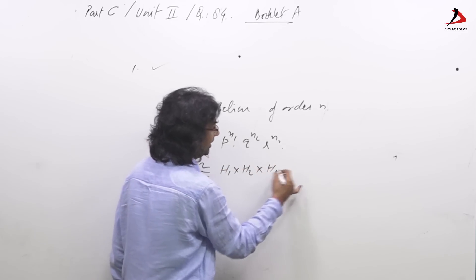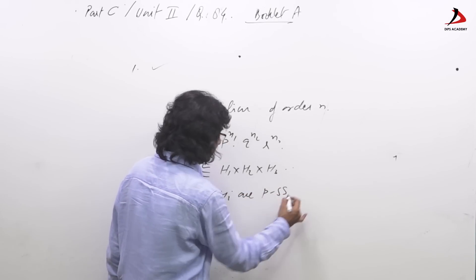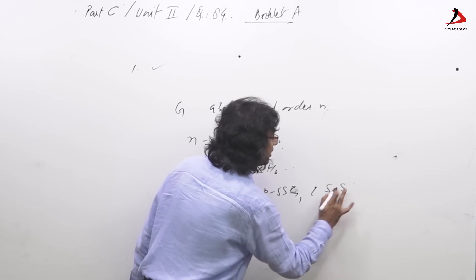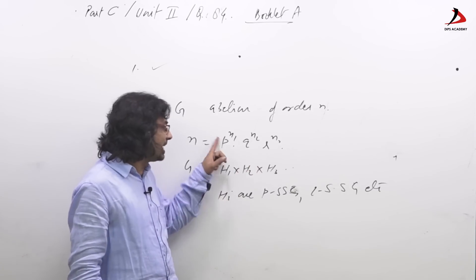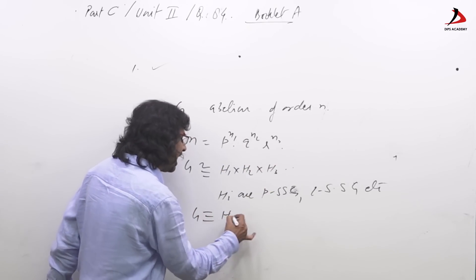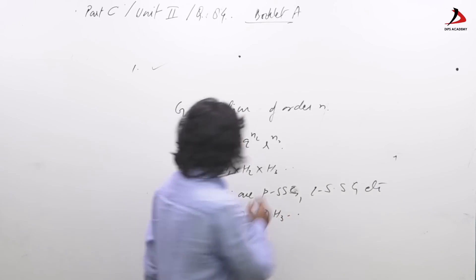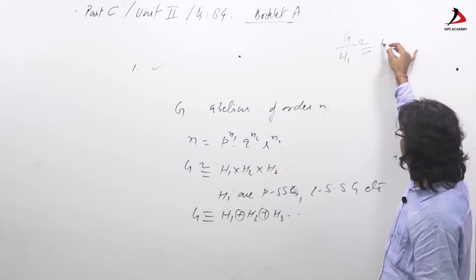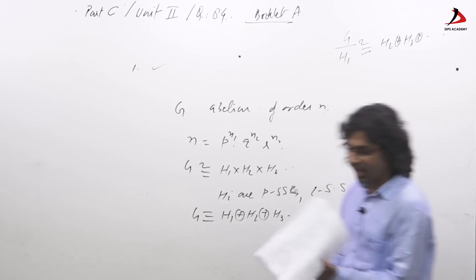Where h_i are p-Sylow subgroup, q-Sylow subgroup etcetera. Say Sylow subgroups: h1 is p-Sylow subgroup, h2 is q-Sylow subgroups. That means g is actually IDP of h1, h2, h3 etcetera. And hence we can always say g/h1 is isomorphic to h2, h3 and so on.